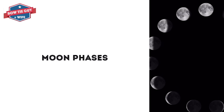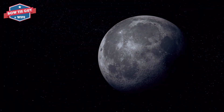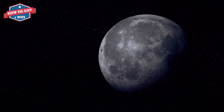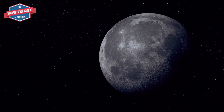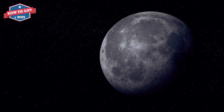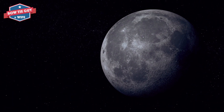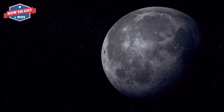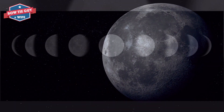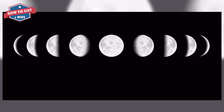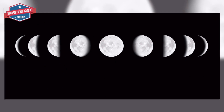Earth has a satellite. It is the moon. It orbits Earth. The moon is small. It revolves or circles around the Earth. It does this every 28 days.